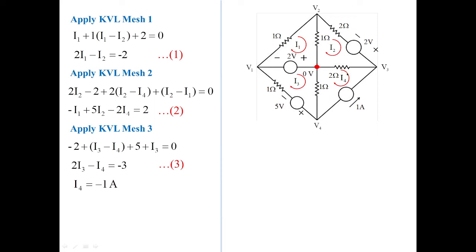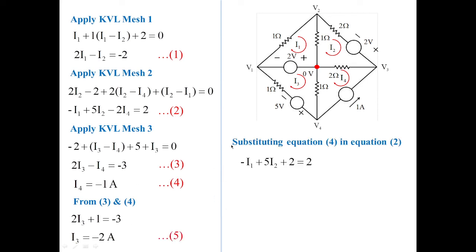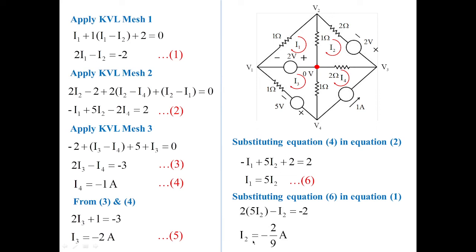By inspection, since the direction of I4 is opposite to the given source current, I4 = minus 1 ampere (equation 4). Substituting equations 3 and 4 gives I3 = minus 2 amperes. Substituting equation 4 into equation 2 gives I1 = 5·I2 (equation 6). Substituting equation 6 into equation 1 gives I2 = minus 2/9 amperes, and then I1 = minus 10/9 amperes.